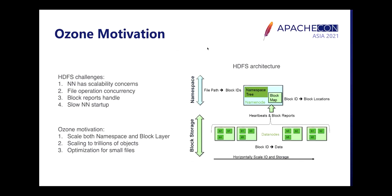Ozone's motivation is to resolve challenges from HDFS. In HDFS, the name node has scalability concerns, and there are a lot of file operation concurrency issues which place a heavy burden on memory. The name node is also very slow to start up, especially for large clusters. Ozone's goal is to scale both the namespace and block layer to trillions of objects, with optimizations especially for small files.